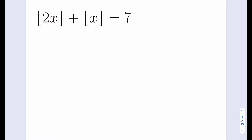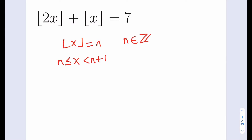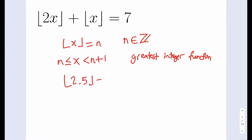Let's go ahead and define the floor value function first. If the floor value of x is equal to n, where n is an integer, this means that x is between n and n plus 1. The floor value is also defined as the greatest integer function — it's the greatest integer that is less than or equal to the number itself. For example, if we have 2.5, its floor value is going to be 2. It's kind of like rounding it down.